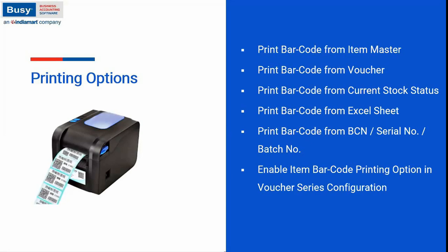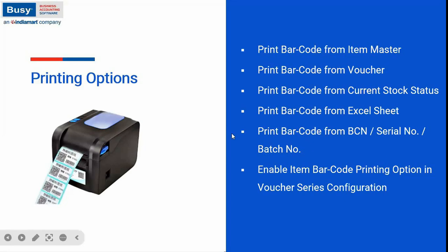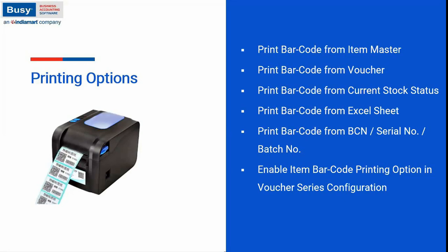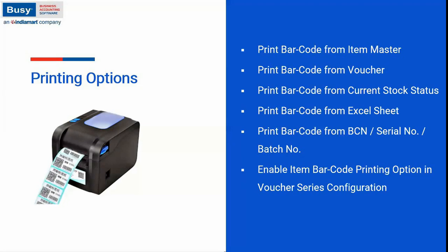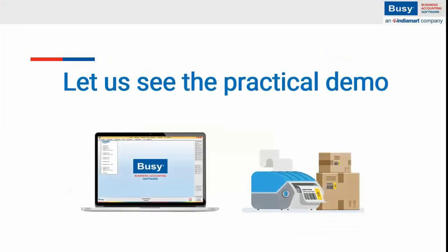One more option is enabling item barcode printing in voucher series configuration. After enabling the print item barcode option there, following a purchase voucher entry, Busy will ask you to print the barcode label. You can press enter, define the number of labels you want, and the barcode will be generated accordingly. Now let's move to the practical demo in Busy software.